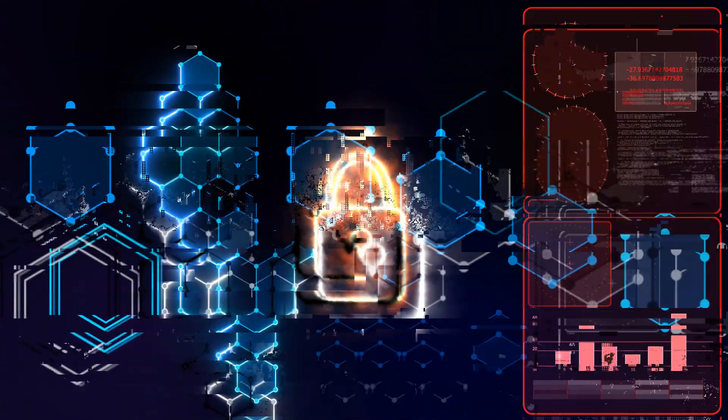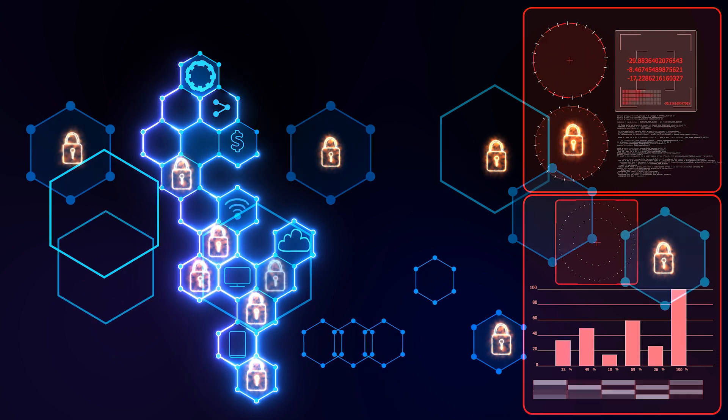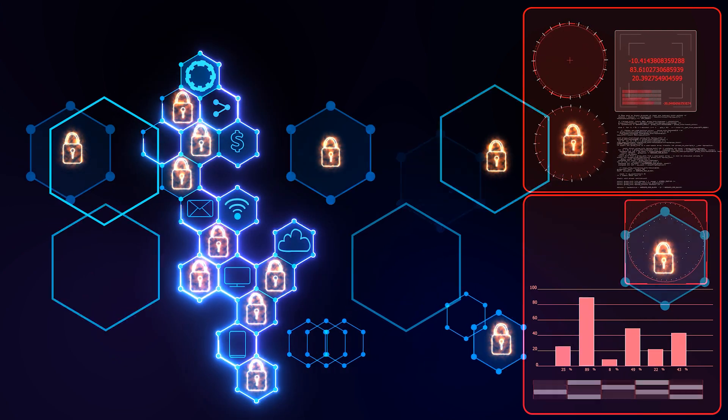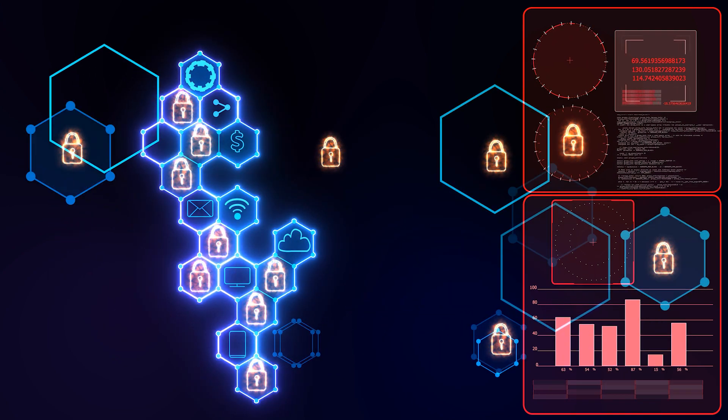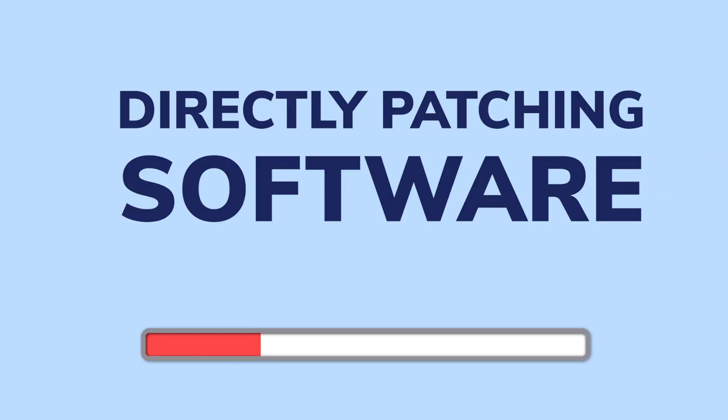Zero-day vulnerabilities emerge on a regular basis, and the perimeter-based technology's capacity to protect against newly discovered security flaws is diminishing by the day. The best way to deal with these types of vulnerabilities is by directly patching software.